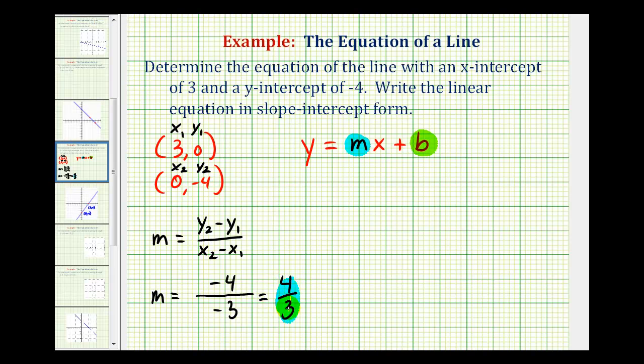So now we know the slope of the line. And then remember b is the y intercept of the line. And we're actually given the y intercept. Therefore, b is equal to negative four.